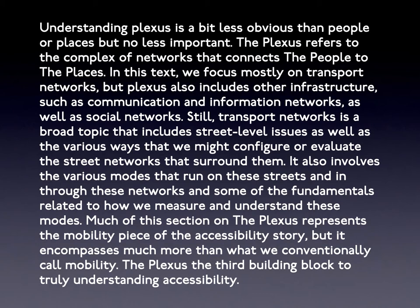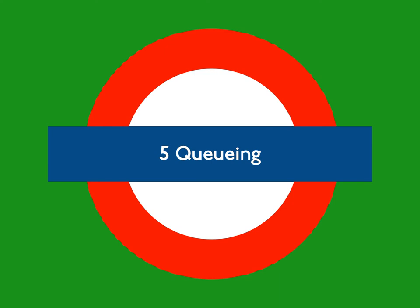Transport networks is a broad topic that includes street-level issues, as well as the various ways that we might configure or evaluate the street networks that surround them. It also involves the various modes that run on these streets and through these networks, as well as some of the fundamentals related to how we measure and understand these modes. Much of this section on the Plexus represents the mobility piece of the accessibility story, but it encompasses much more than what we conventionally call mobility. The Plexus is the third building block to truly understanding accessibility.